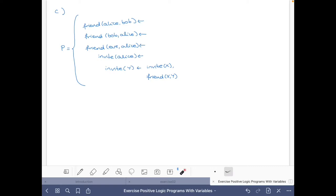And here comes part C, which is about friends and inviting others to parties. We have first that Alice is the friend of Bob, Bob is the friend of Alice, Eve is the friend of Alice, and Alice is invited to a wonderful party.